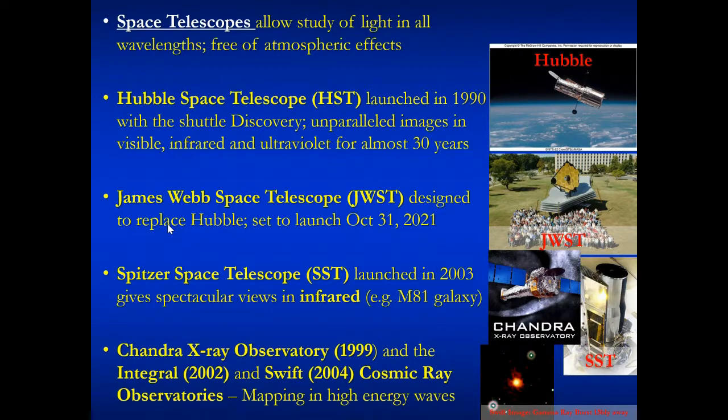And the James Webb Space Telescope is set to replace the Hubble. It's pictured here. That's set to go up on October 31st of 2021 here. And the Spitzer Space Telescope was launched in 2003. It's pictured here. It's giving images in infrared. It's searching some of those nebulae out there for protostars and things of the like. We also have an X-ray observatory called the Chandra X-ray Observatory that was launched in 1999 and the Intricle in 2002 giving us X-ray images.